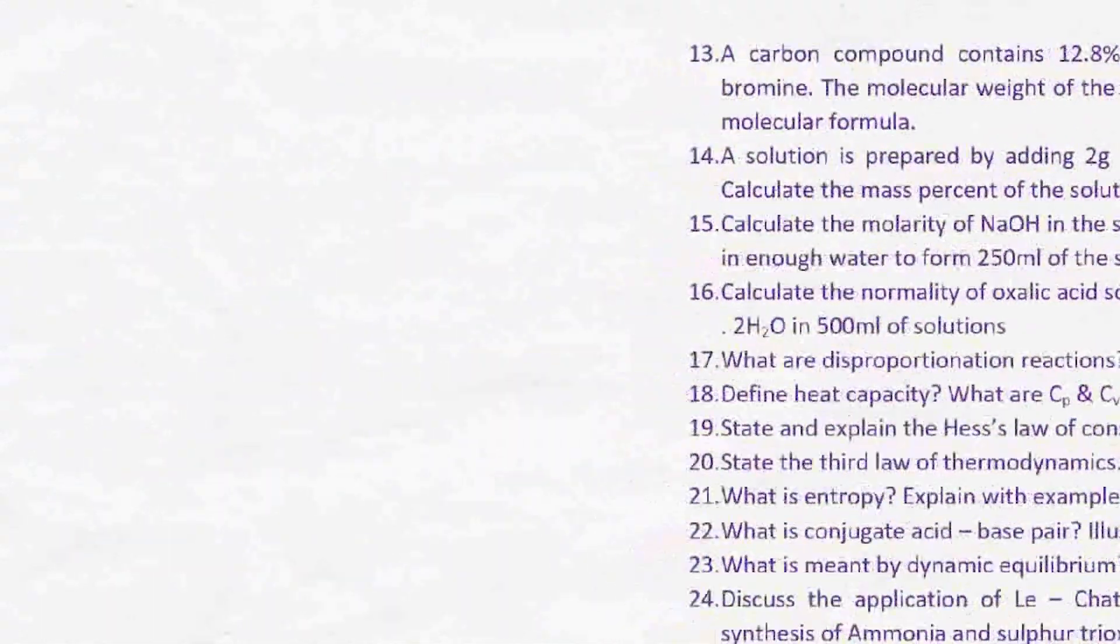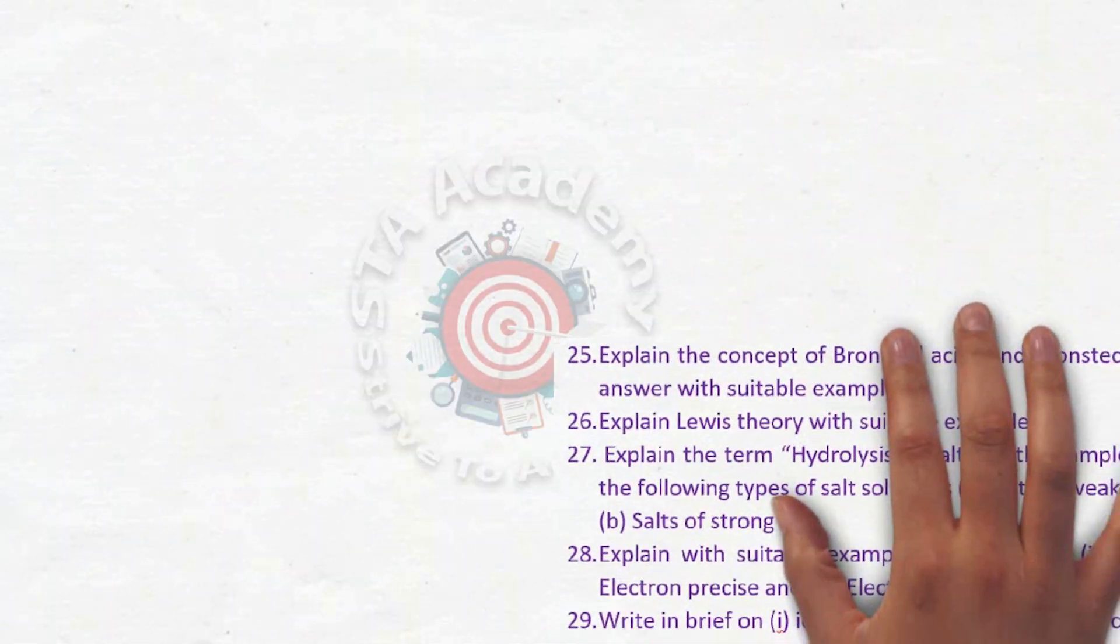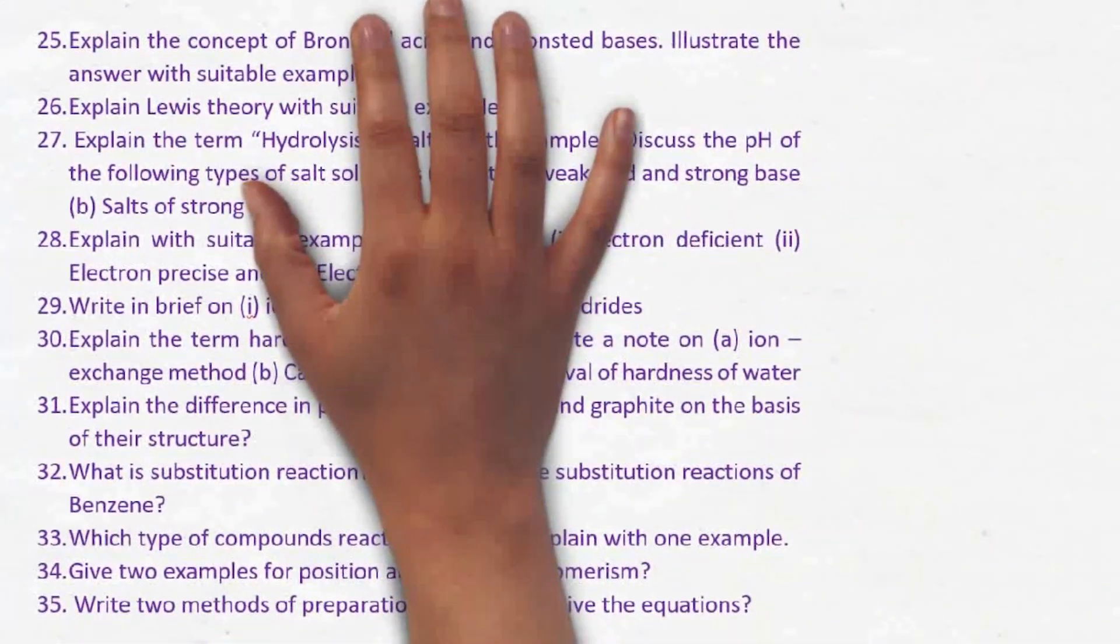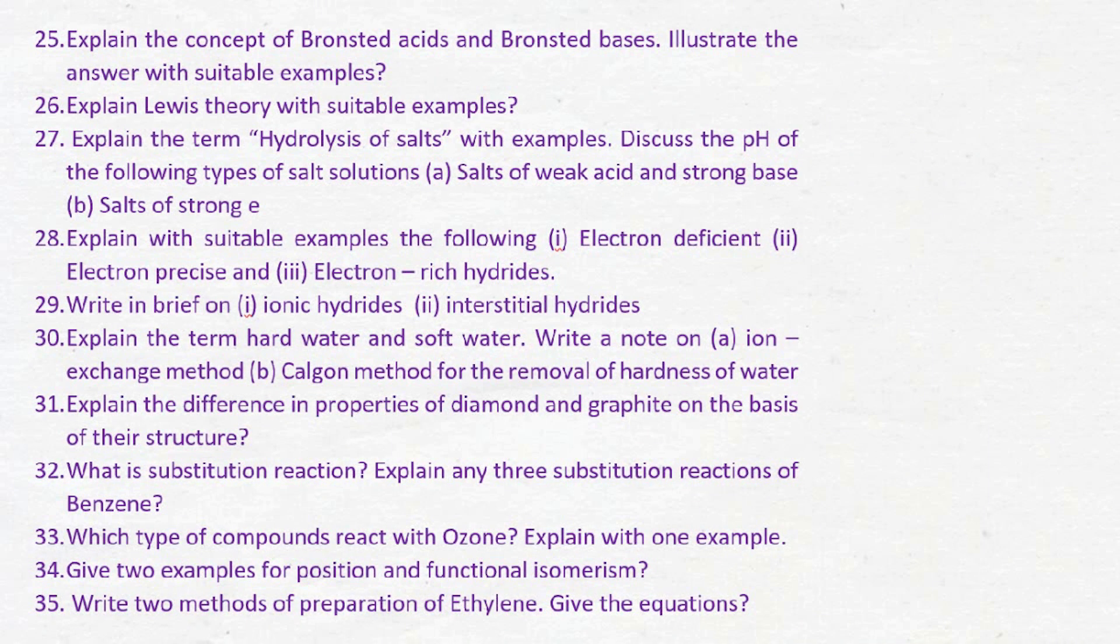Twenty-fourth is discuss the application of Le Chatelier's principle for the industrial synthesis of ammonia and sulfur trioxide. These are very important questions. Next is twenty-fifth question, Bronsted acid and Bronsted base. Twenty-sixth is explain Lewis theory with suitable examples. Twenty-seventh, hydrolysis of salts.